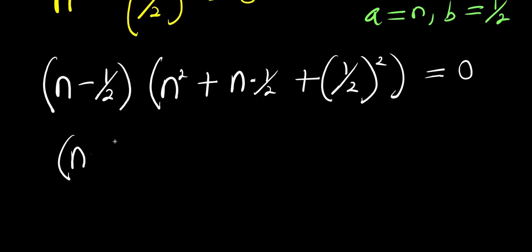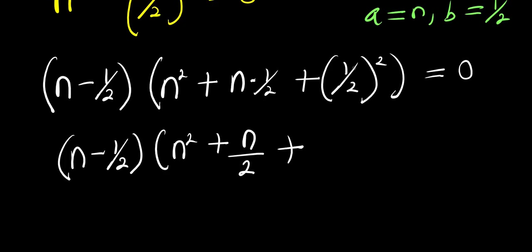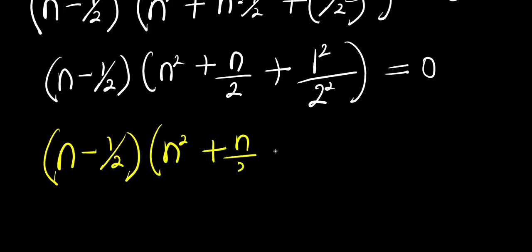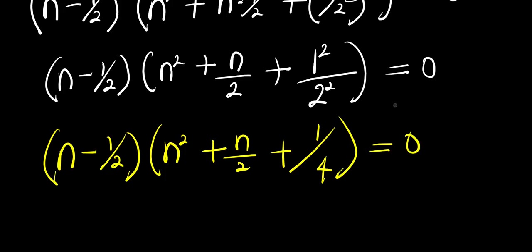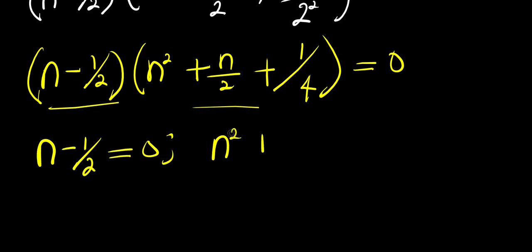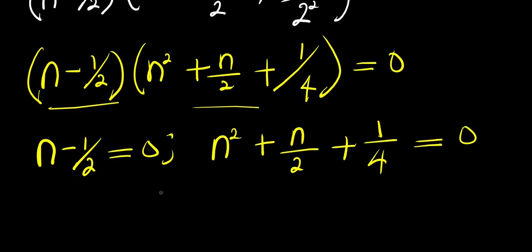So from here: (n minus 1 over 2) times (n² plus n over 2 plus 1 over 4) equals 0. I can distribute the exponent: 1² over 2² gives 1 over 4. Now I can equate each factor to zero: n minus 1 over 2 equals 0, and n² plus n over 2 plus 1 over 4 equals 0. These are the two distinct equations we are going to solve.